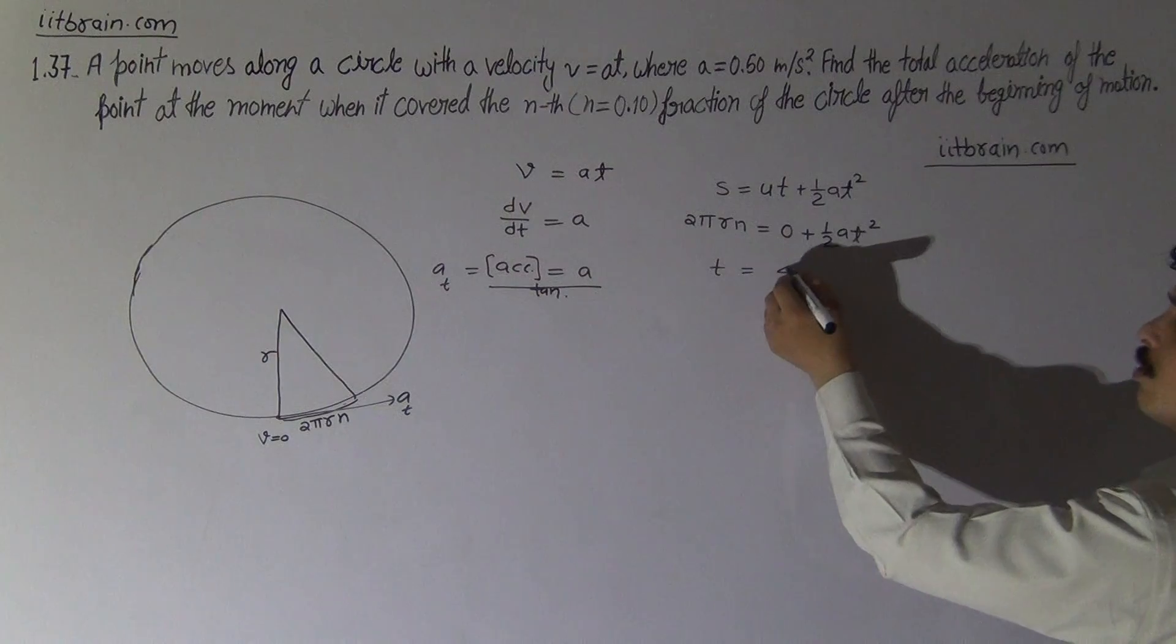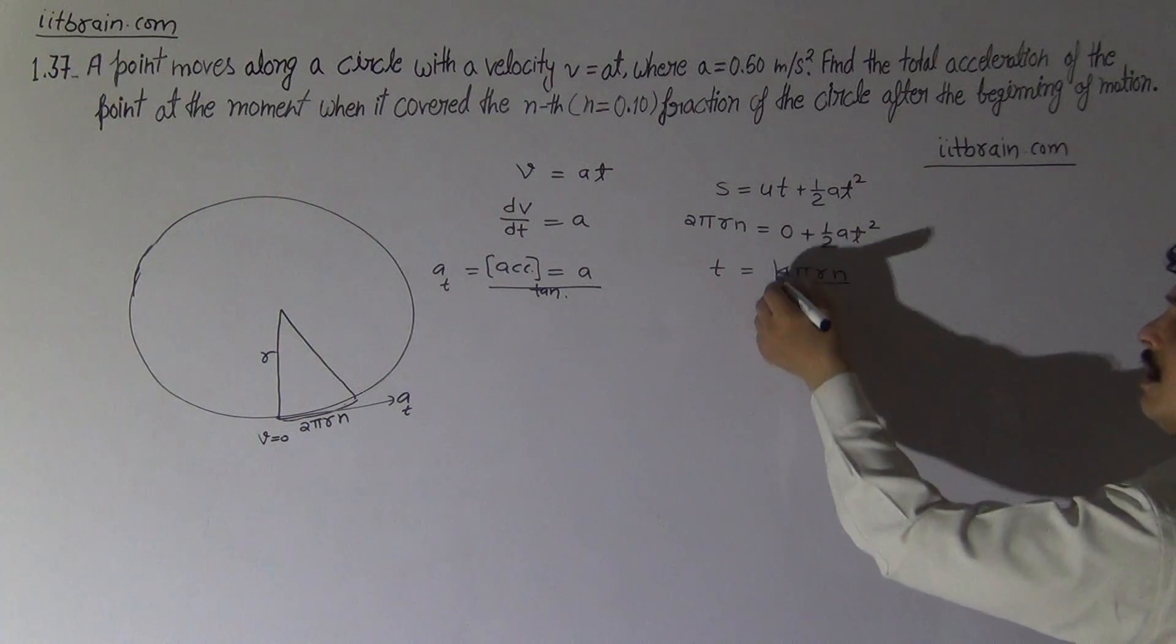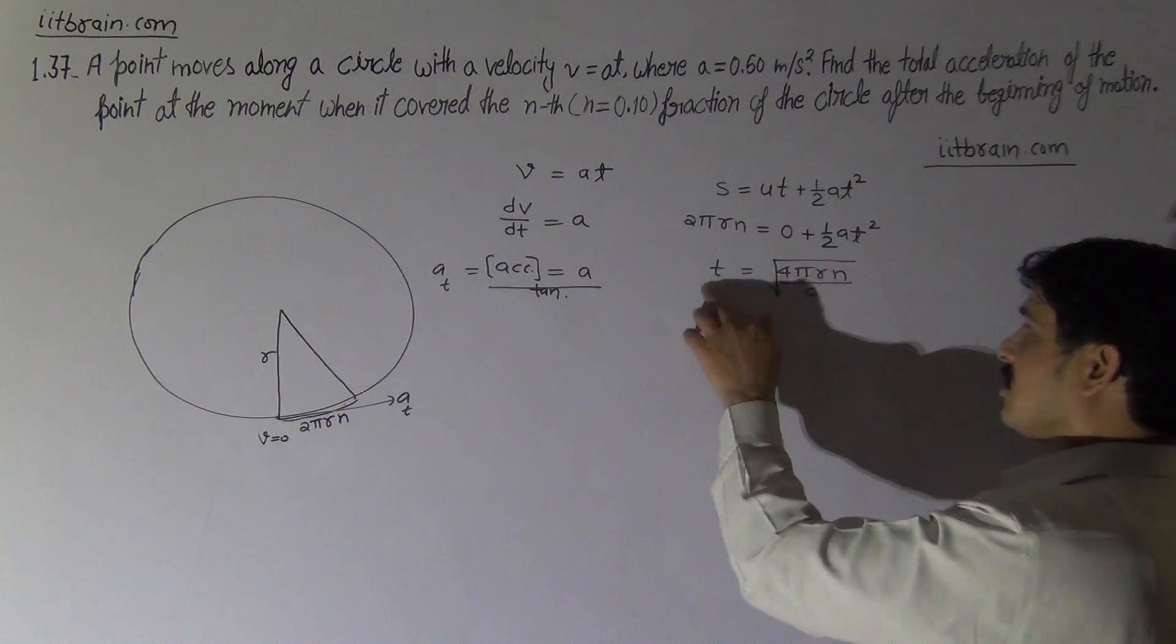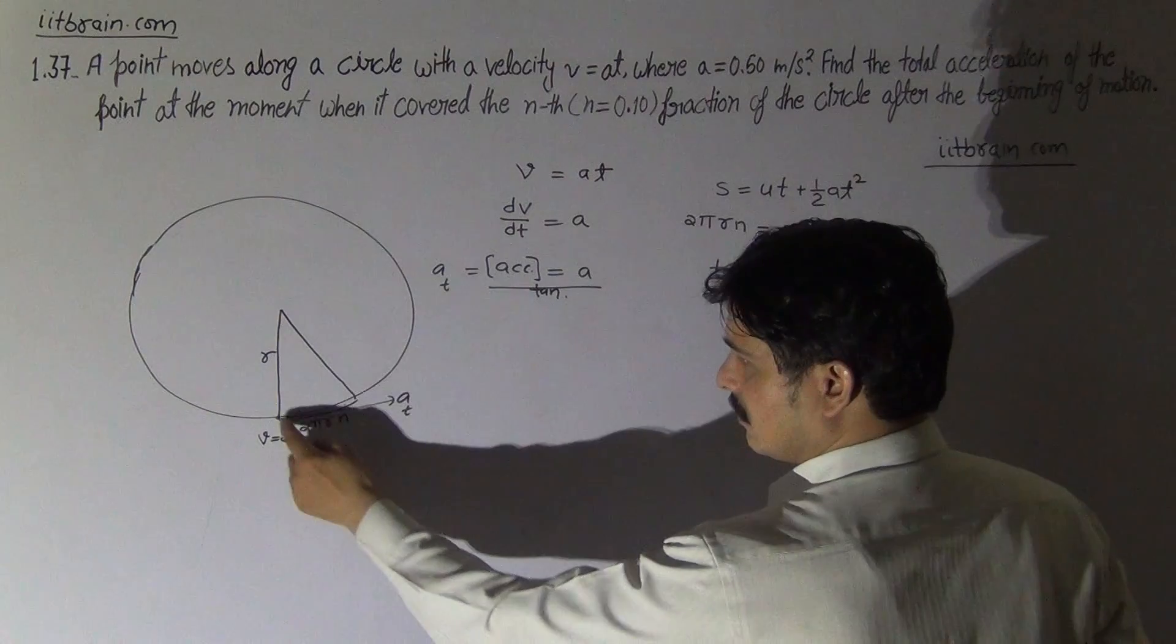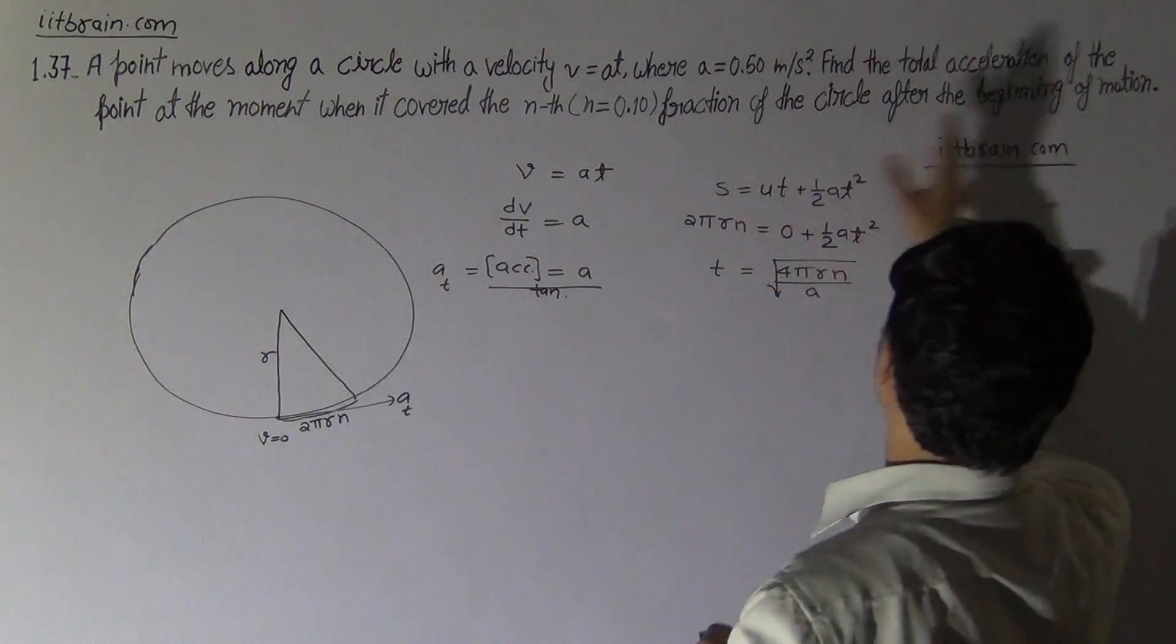So t will be √(4πrn/a). This much time when the particle takes to travel this much distance. After this time, we have to calculate the total acceleration.